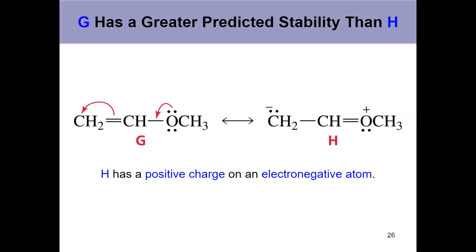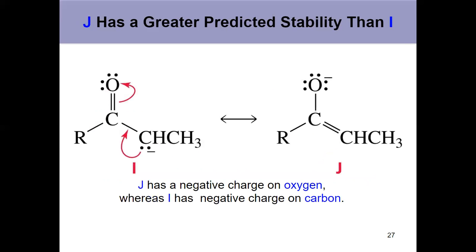Putting a positive charge on something that's electronegative is not ideal. G has greater stability than H because H has separation of charge and it's put a positive charge on something that's electronegative. Again, keeping in mind they're both contributors, but the one that's more stable is the major contributor — G in this case. So positive charge on an electronegative atom is the third thing on the list.